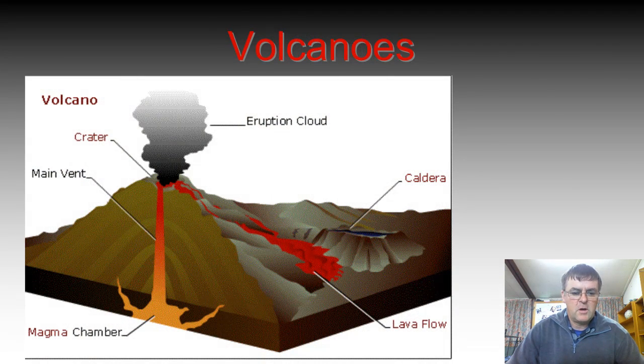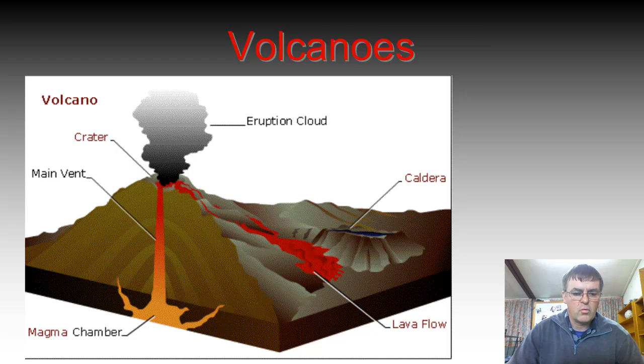Volcanoes tell us it's hot inside the Earth as well, because we've got molten rock being spat out of them, so that tells us what's in the next layer down, the layer we call the mantle, what sort of chemicals are in those rocks and tells us what's down there.